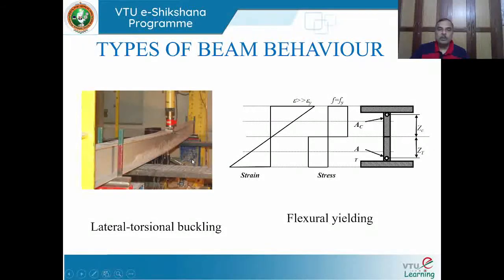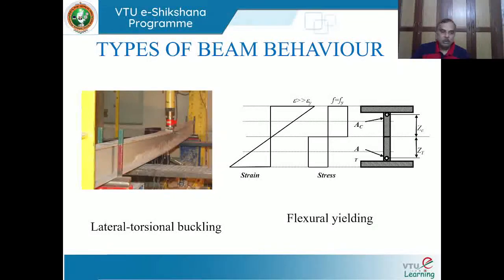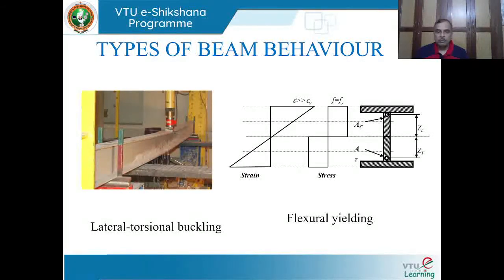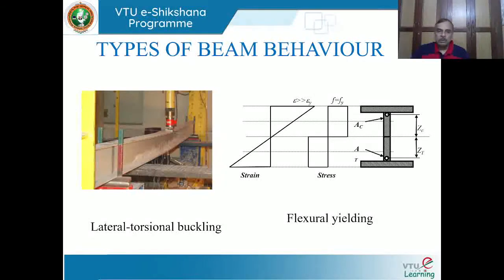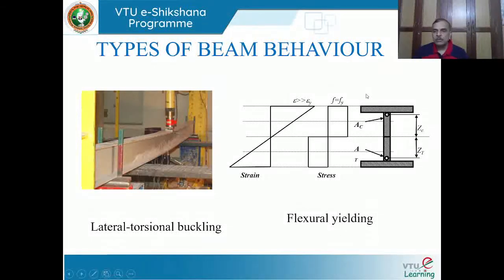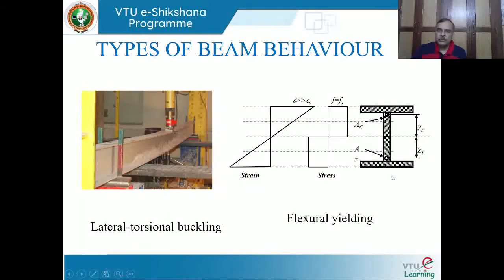The discussion here is confined to the behavior of a laterally restrained beam, where the beam cannot bend in the lateral direction. One example is where the I-section is embedded inside concrete - confined by surrounding concrete or a roof slab cast over the beam with the compression flange completely anchored. In such a situation, the beam bends only in the vertical plane.